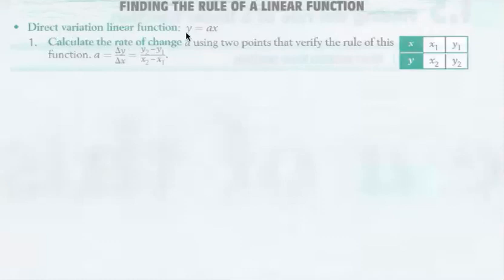Direct variation linear function y equals ax. First, calculate the rate of change a using two points that verify the rule of this function as a is equal to delta y over delta x, which is y2 minus y1 divided by x2 minus x1. So they're going to give you some values, you're going to figure out the rate of change.